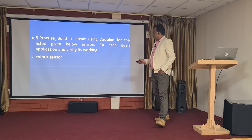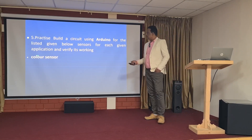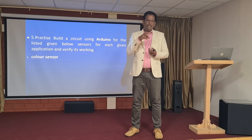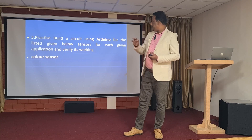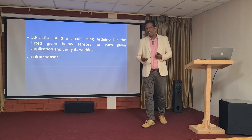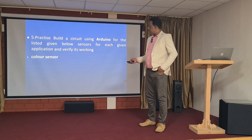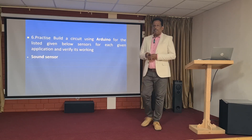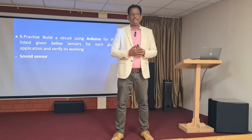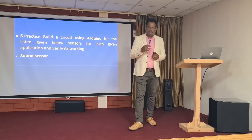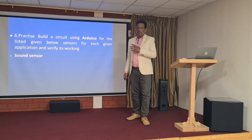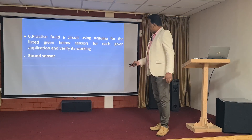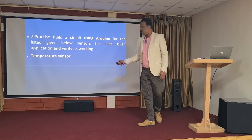The fifth experiment involves building a circuit using Arduino interfaced with a color sensor. After writing the program, if you place a red object in front of the sensor it should display 'red' on the LCD, and similarly for other colors. The sixth experiment uses a sound sensor — to make it easy for students, we do a clap switch where one clap turns the light on and another clap turns it off. The seventh experiment reads temperature, which we will explain in detail with the kits.